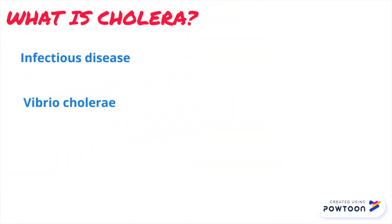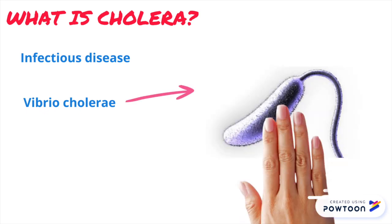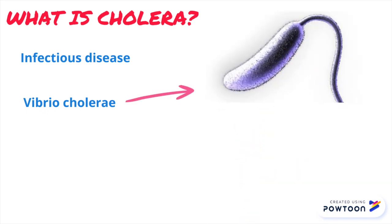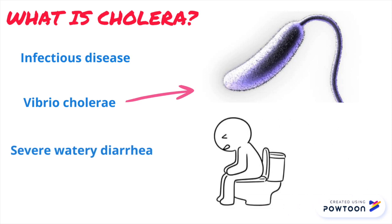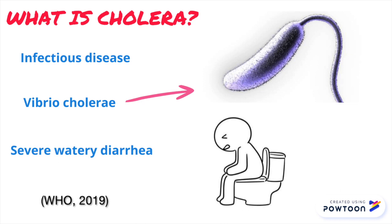Cholera is an infectious disease caused by the Vibrio cholerae bacterium. Upon infection, this can result in severe watery diarrhea and eventual dehydration that can lead to fatality.